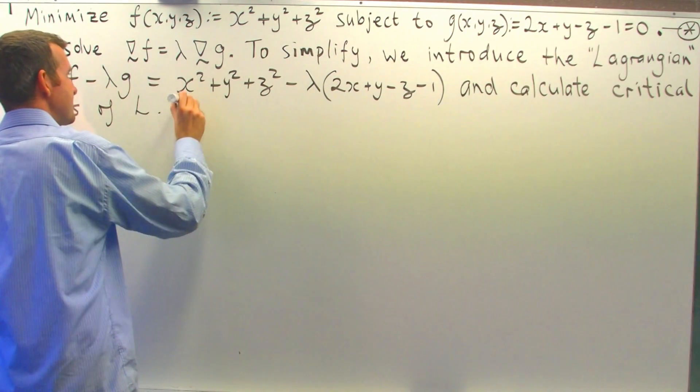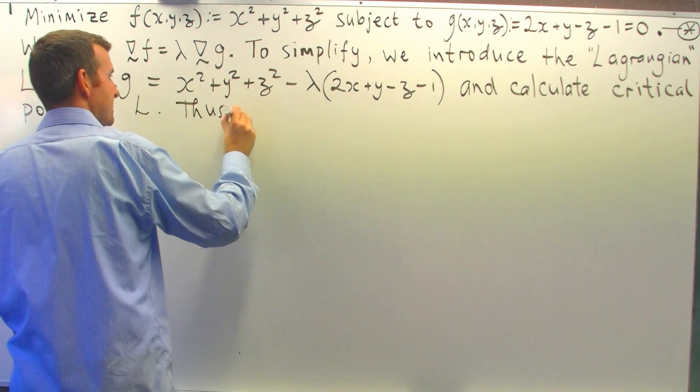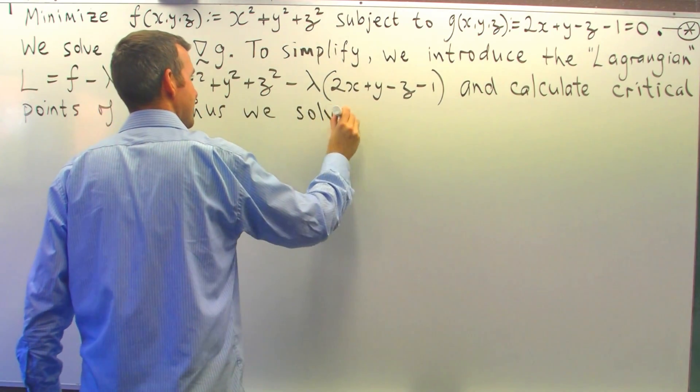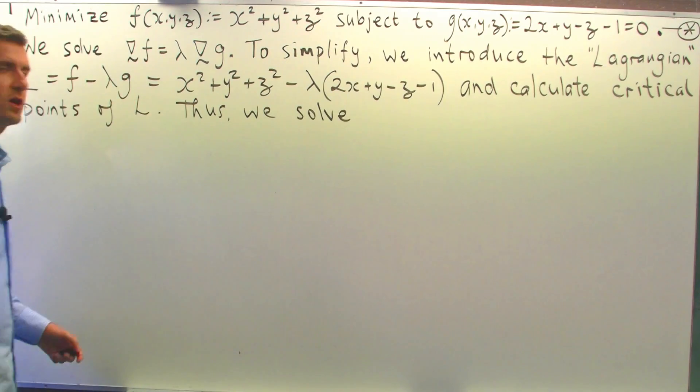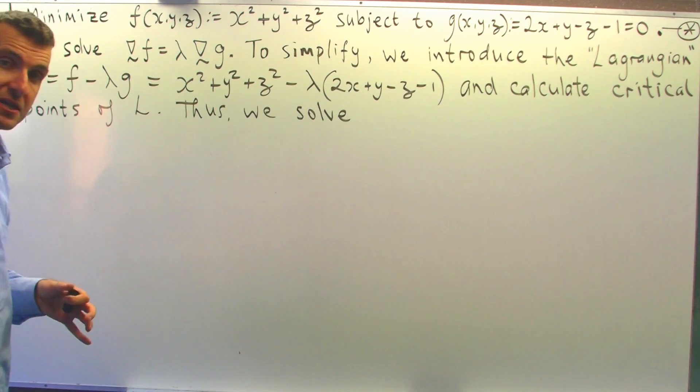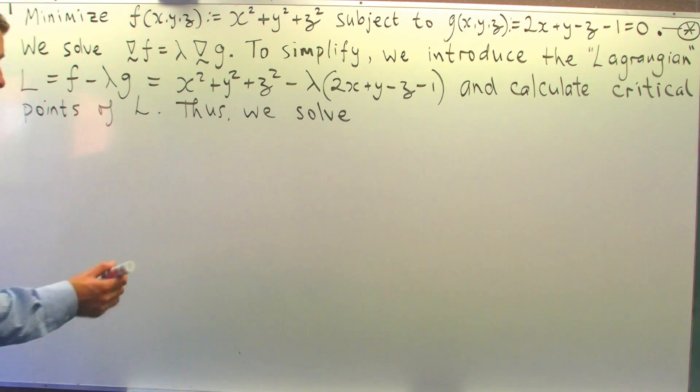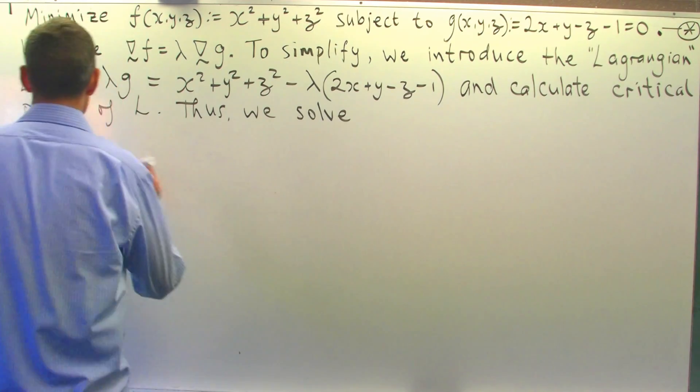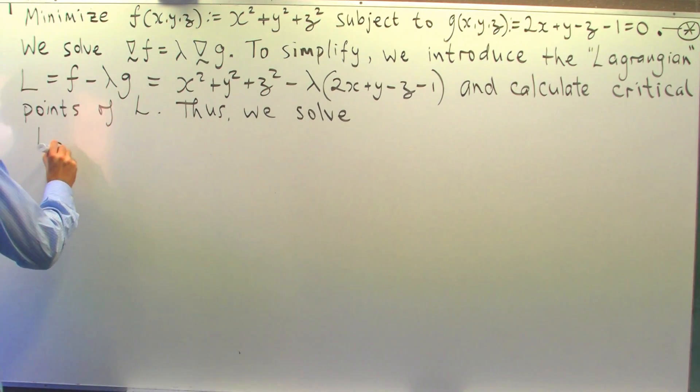So to do that, we solve the following equations. Remember, a function L has its critical points when the partial derivatives are all equal to 0. So let's calculate the partials and set them equal to 0.